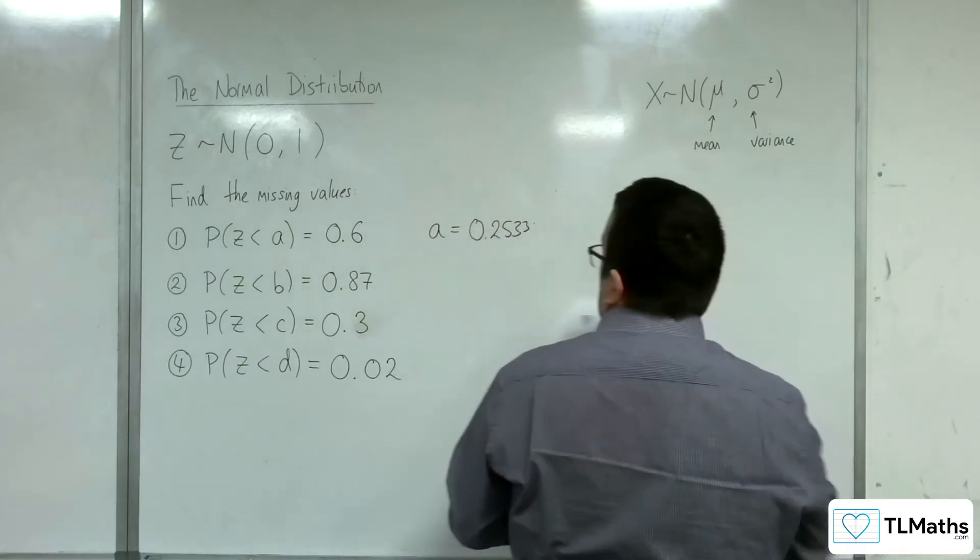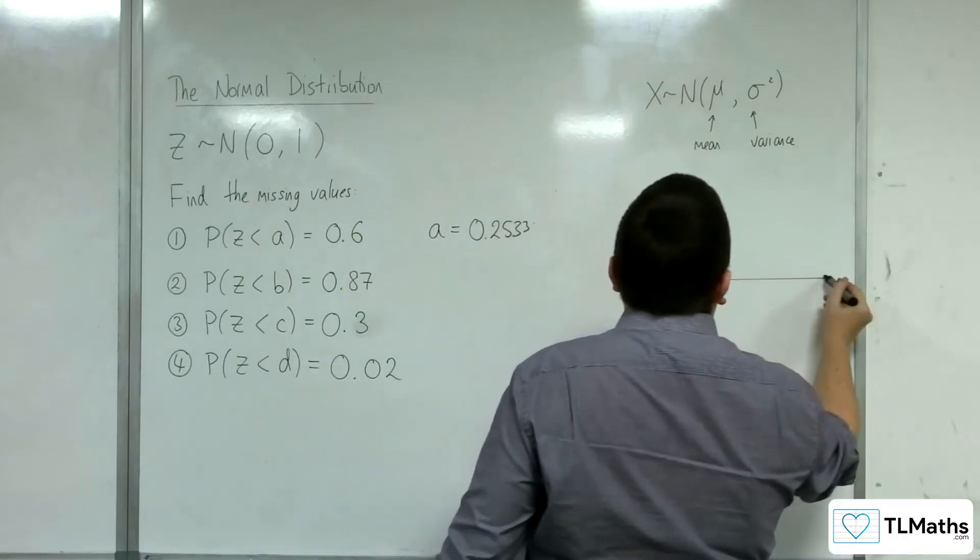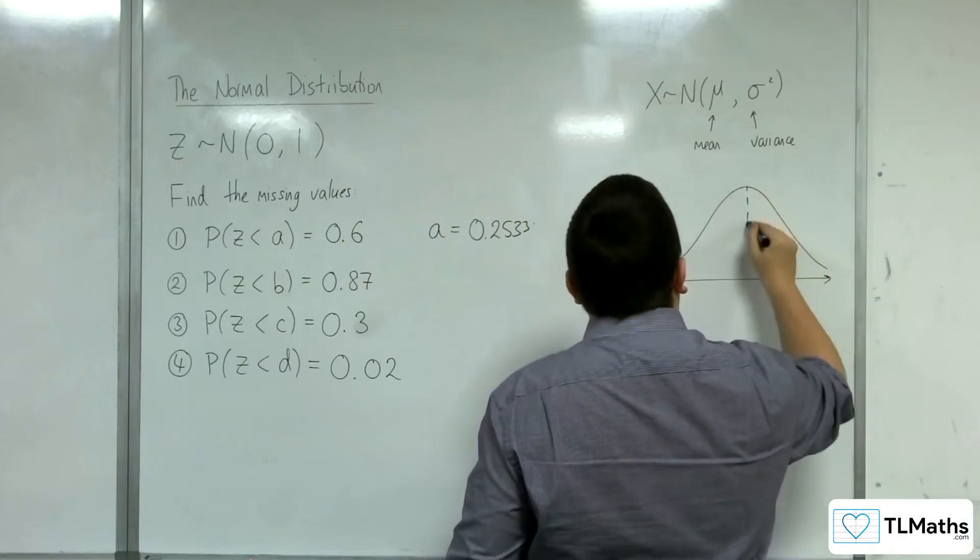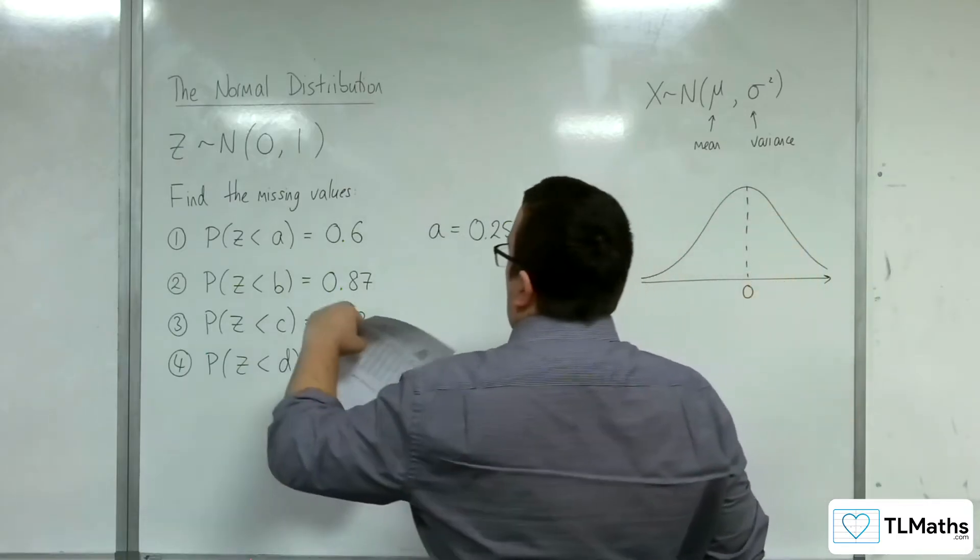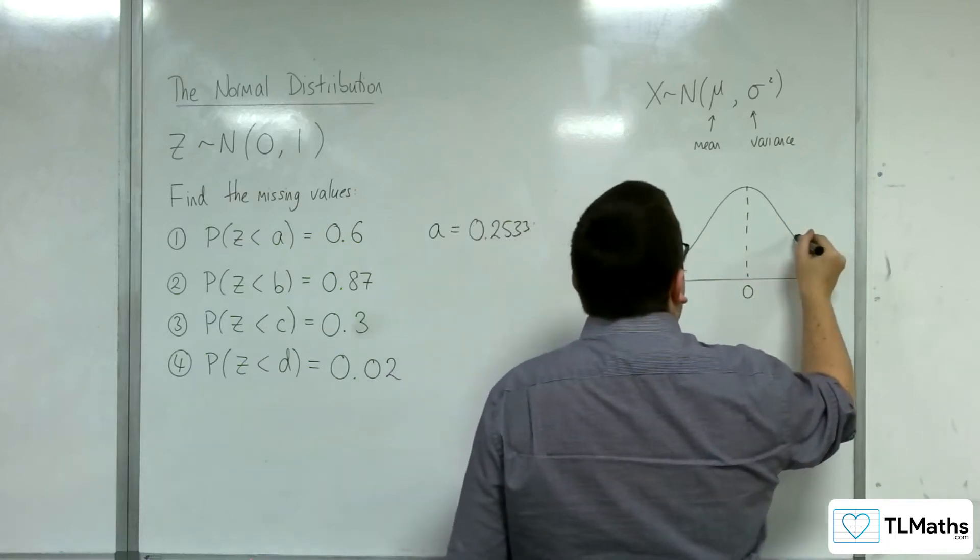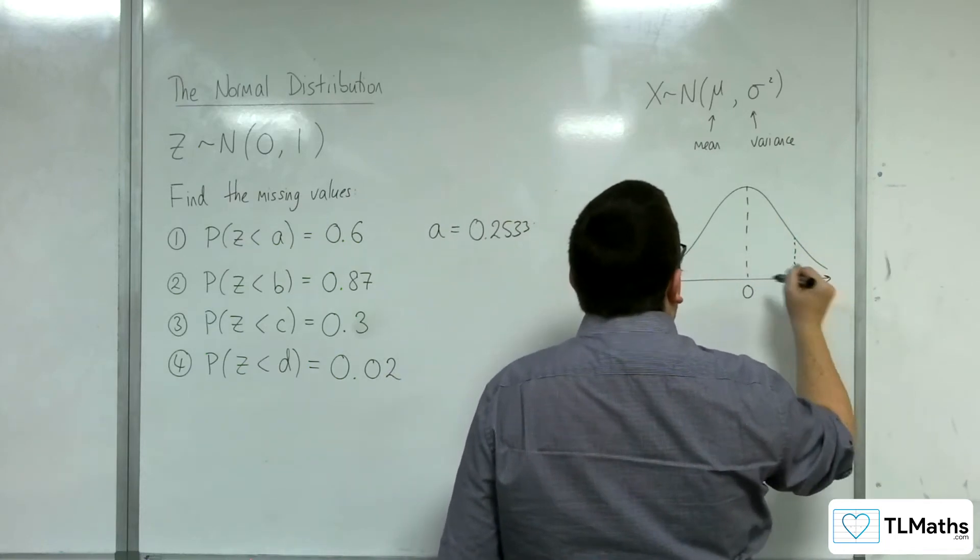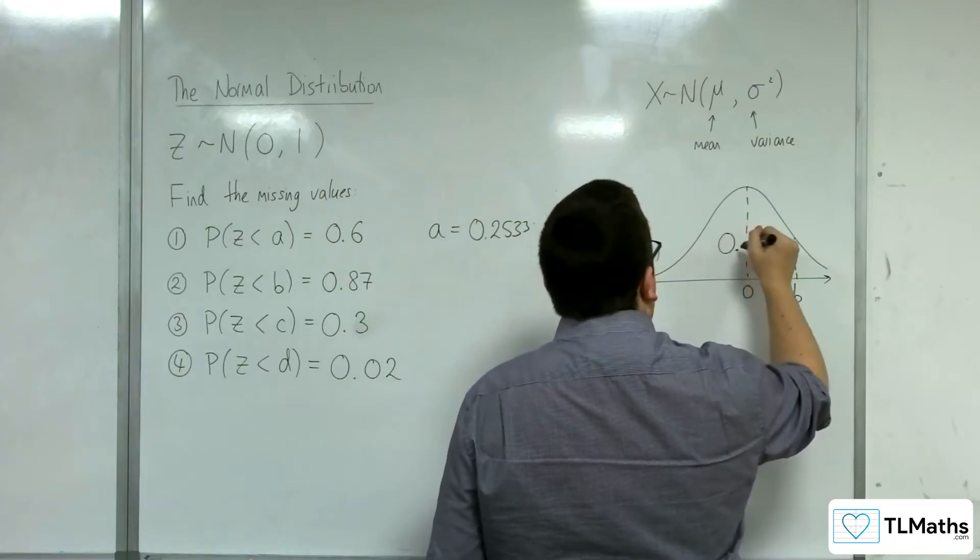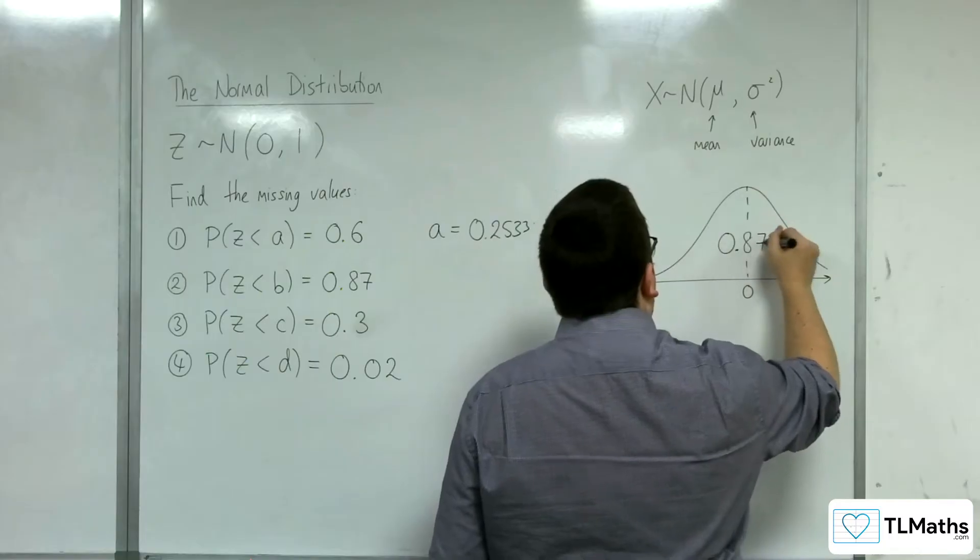So, this time, for number 2, there's 0. Somewhere along here is B, so that to the left, the area is 0.87. So, B would have to be over here, in order for this to be an area of 0.87.